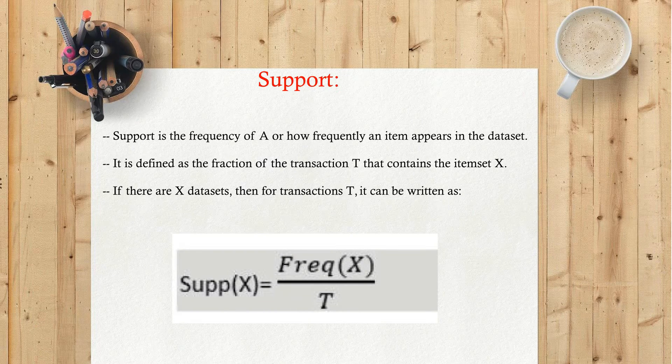Support: Support is the frequency of A, or how frequently an item appears in the dataset. It is defined as the fraction of the transaction T that contains the item set X. If there are X datasets, then for transactions T, it can be written as...